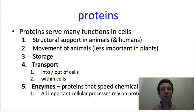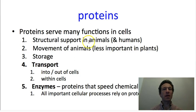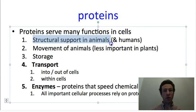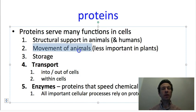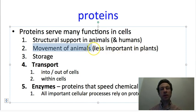That's all we're going to say about carbohydrates. Moving on to proteins: proteins serve a variety of important functions in cells. One role of proteins is to provide structural support in animals — our cartilage is made largely out of protein, our bones have a large protein component, and our muscles are largely comprised of protein. Proteins also allow movement of animals — since our muscles are protein and muscles allow us to move, proteins are really responsible for our ability to move. Since plants don't move in similar ways to animals, proteins are much less important for this role in plants.